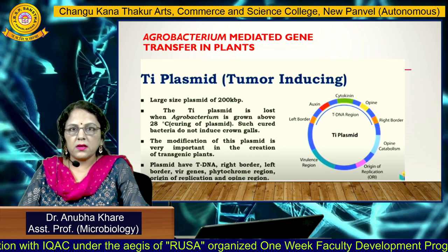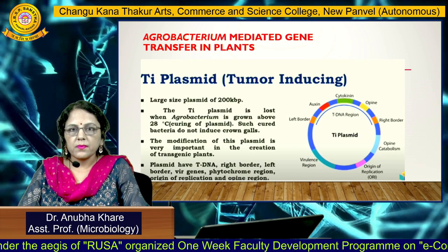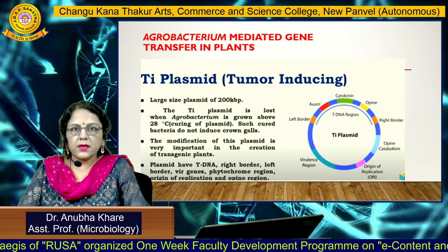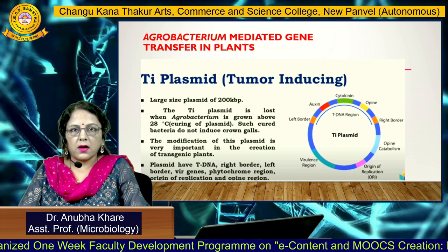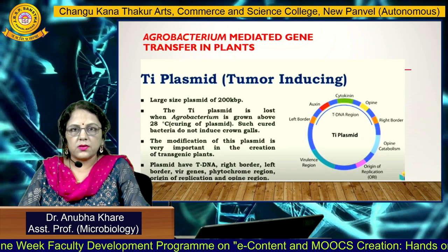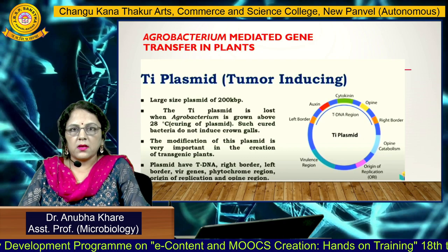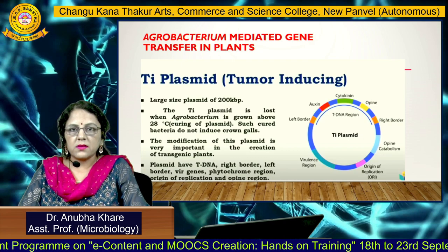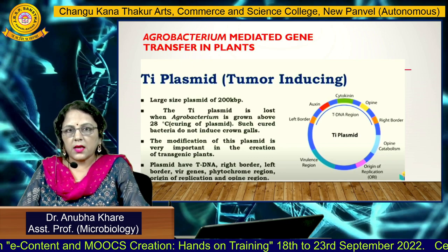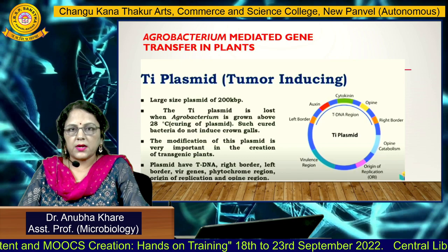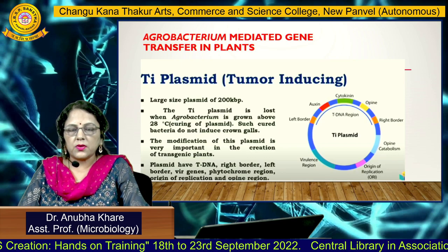Agrobacterium-mediated gene transfer in plants uses Agrobacterium, a rod-shaped gram-negative soil bacterium, which is highly used in plant tissue culture for producing transgenic varieties of plants. It is also known as the natural engineer of plants. Transgenic varieties are produced using Ti plasmid — the tumor-inducing plasmid.